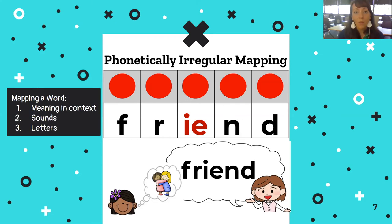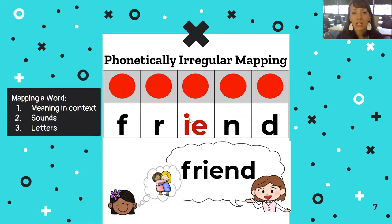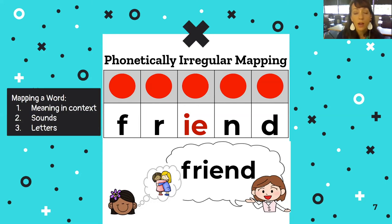Anytime you have more than one letter that combines to make a sound — like in 'friend' — it goes in the same box. If we had a digraph like the 'sh' sound in the word 'ship,' the 'sh' would go in one box together — you'd only need three boxes for 'ship' because it only has three sounds. Letters share one box only if it's a digraph, trigraph, or vowel team of some sort.